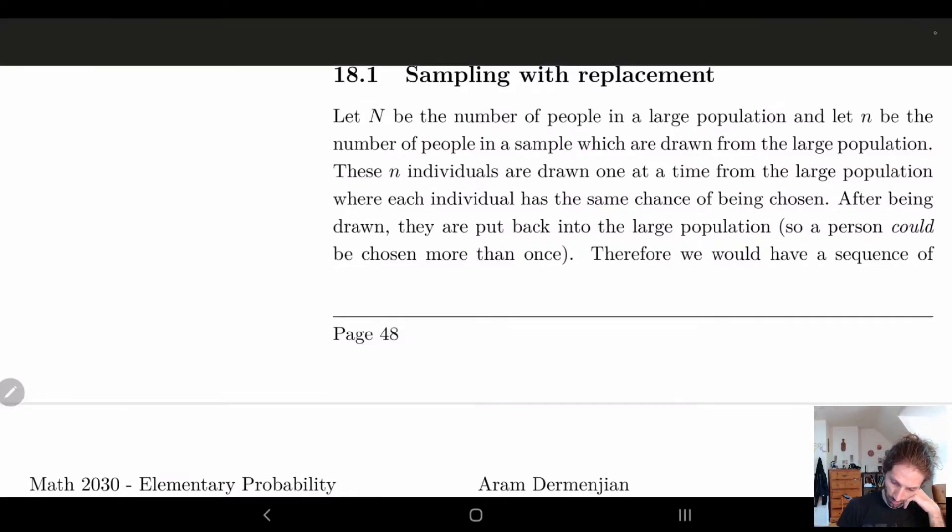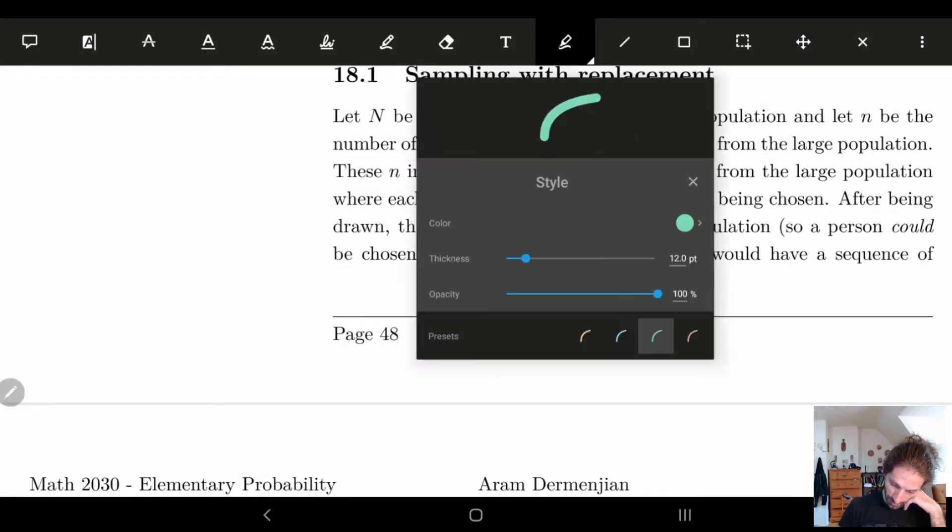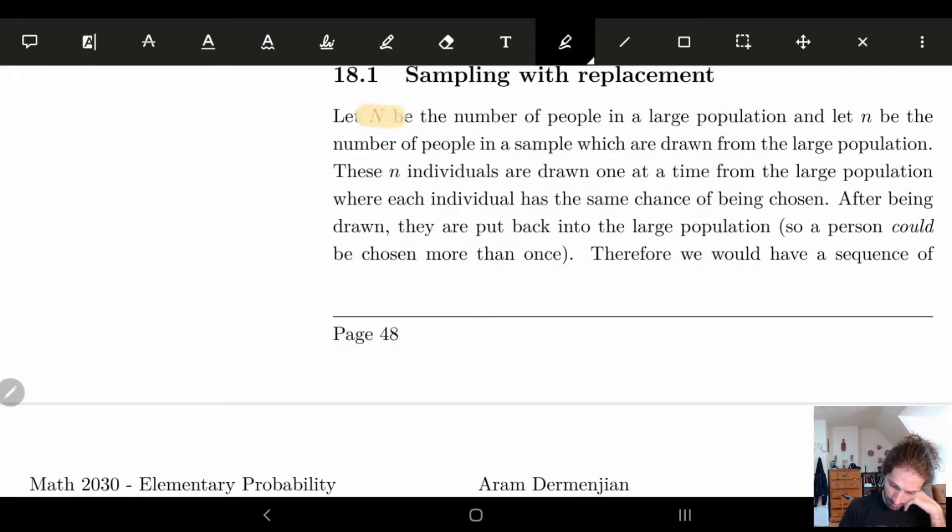So in particular here, what I basically said is, let me highlight the key points. So N is the number of people and n be the number of people in a sample. So these n individuals are drawn one at a time, where each individual has the same chance of being chosen. But once they're drawn, they're put back into the large population. So a person can be chosen more than once. And this is a key part. This is why it's with replacement.